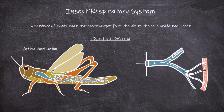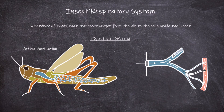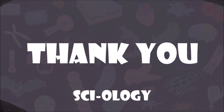During active ventilation, when the abdomen expands, inspiration of air occurs, and when the abdomen contracts, the air is expelled out of the insect.